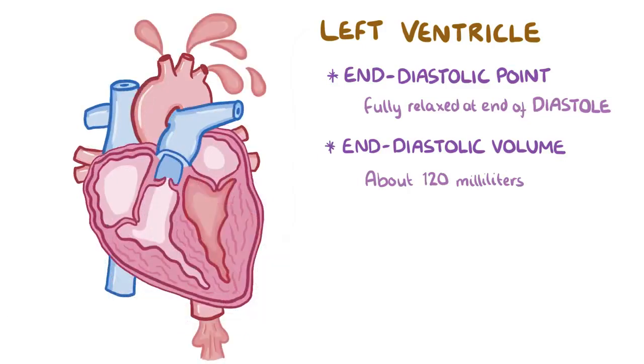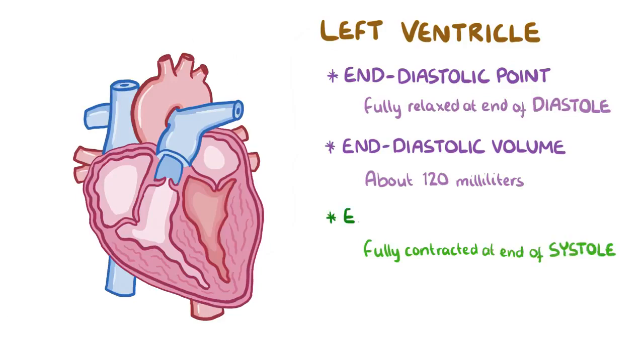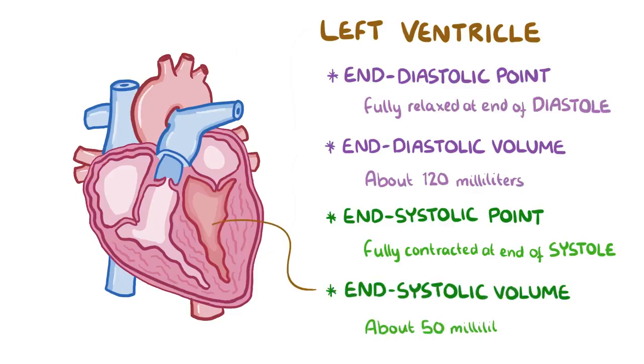Then the left ventricle contracts, forcing blood through the aorta and into the whole arterial system. After that is another moment when the left ventricle is fully contracted. This occurs at the end of contraction or systole, also called the end-systolic point. The volume of blood within the left ventricle is called the end-systolic volume and it's about 50 milliliters.